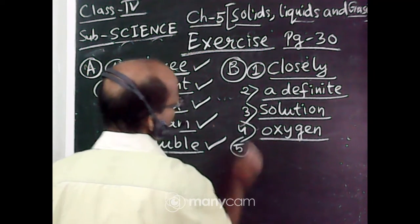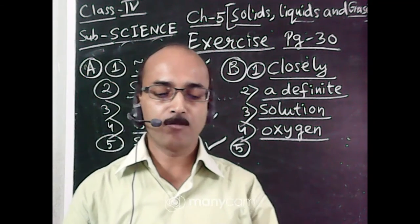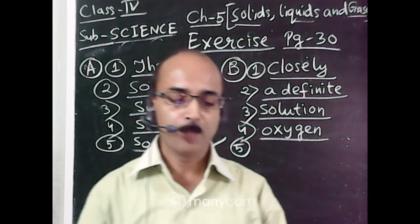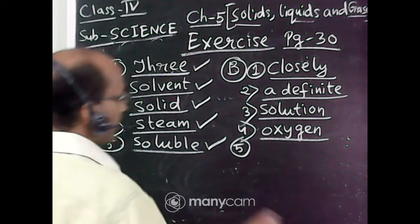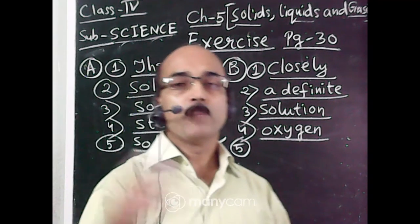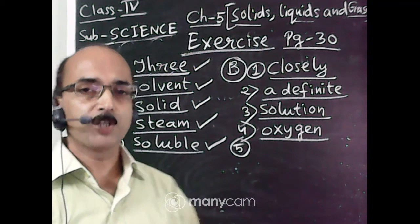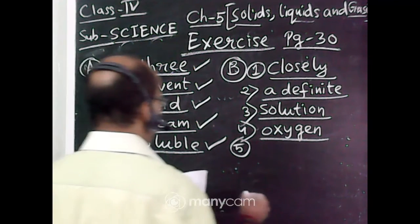Number five: molecules of gases have very dash spaces between them. Molecules of gases have very large spaces because molecules in a gas are very loosely packed, far apart from each other. Very large spaces.